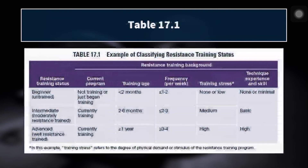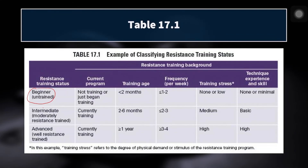According to the NSCA, this table classifies resistance training status — one example separating out beginners, intermediates, and advanced trainees. A beginner trainee is anyone with less than two months of training in the weight room. They might have been competing in their sport for 10 years, but just less than two months in the weight room. This athlete could train as little as one to two times per week with low training stress, and they currently possess no or minimal technique or skill.